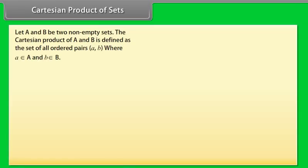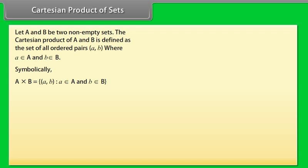Let capital A and capital B be two non-empty sets. The Cartesian product of capital A and capital B is defined as the set of all ordered pairs (A, B), where A belongs to capital A and B belongs to capital B. Symbolically, A × B = {(A, B) such that A belongs to A and B belongs to B}.